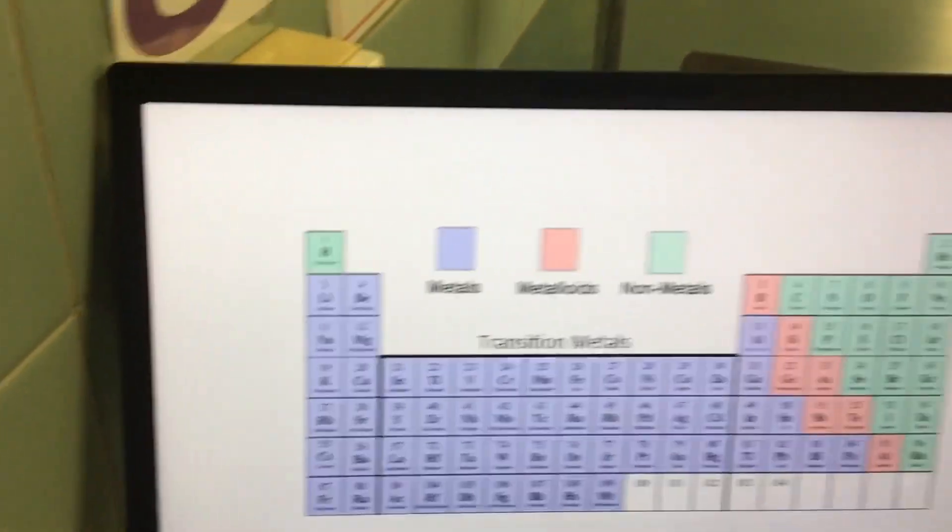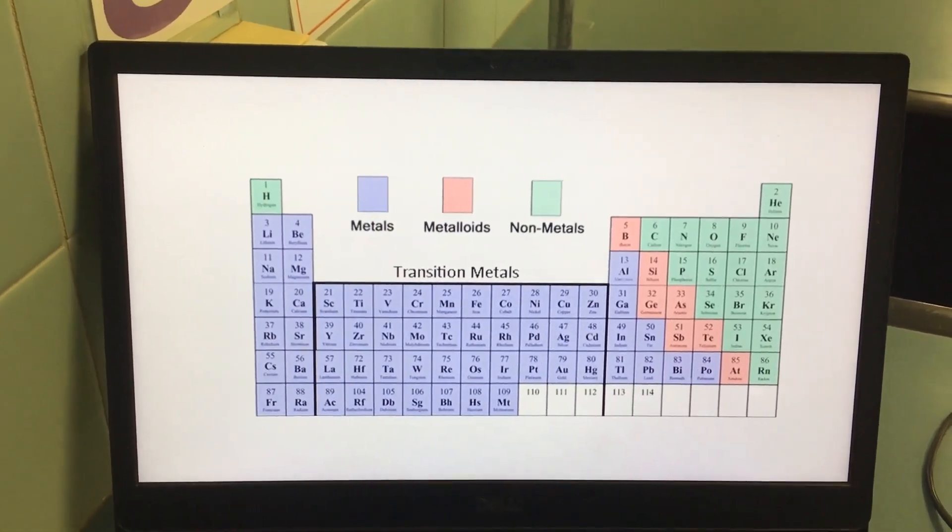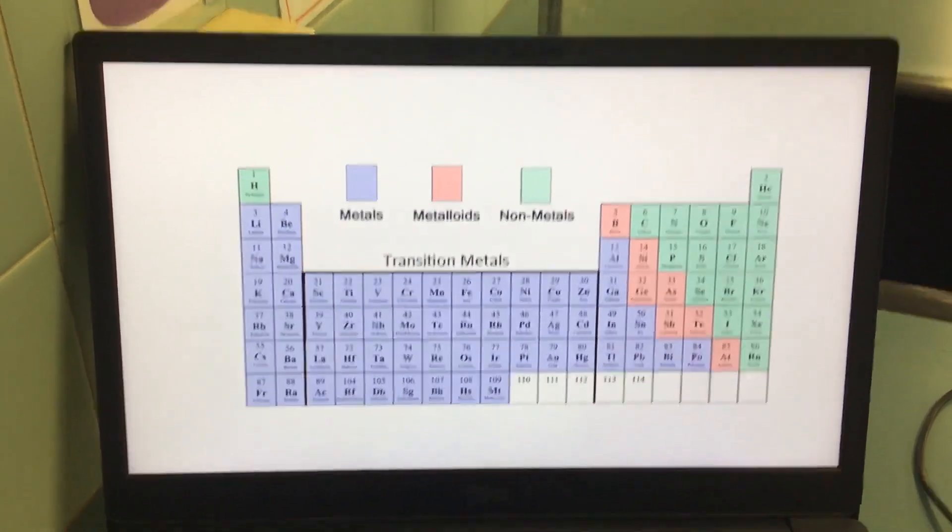So if an element on the periodic table has those properties, they're metals. If they do not have those properties, or do not have all those properties, they're metalloids or non-metals.